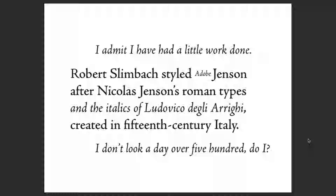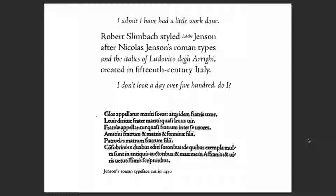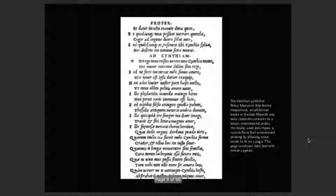Here's a version of Adobe Jensen — the digitized version of the Jensen we just saw. A side-by-side comparison shows Jensen's 1470 letterpress on the bottom and what we can do digitally today on top. A lot of these classical typefaces have been digitized. The Venetian publisher Aldus Manutius distributed inexpensive, smaller format books in the late 15th and early 16th century.